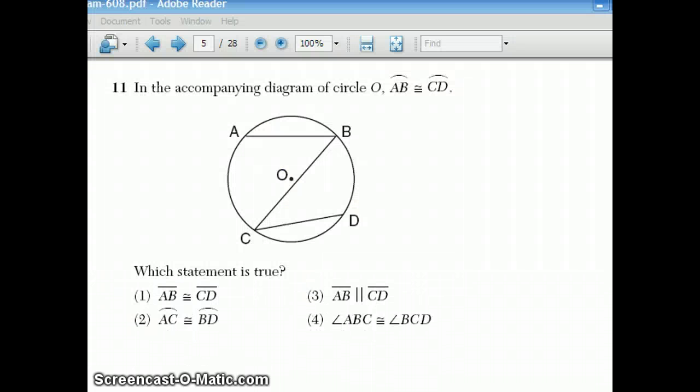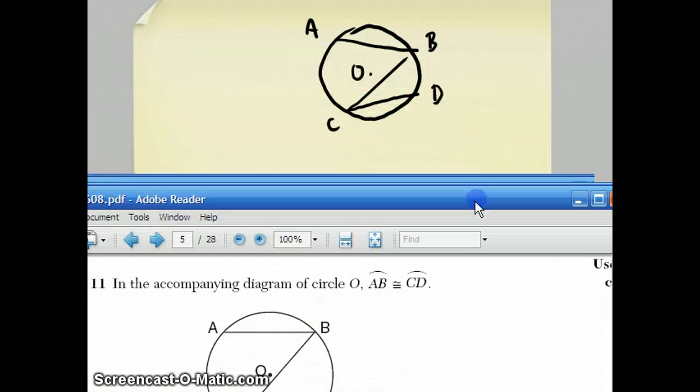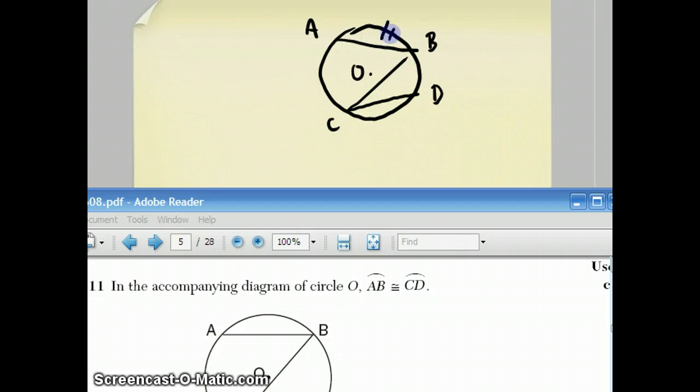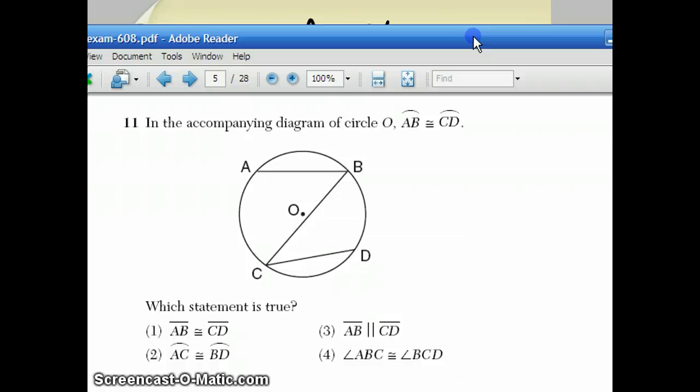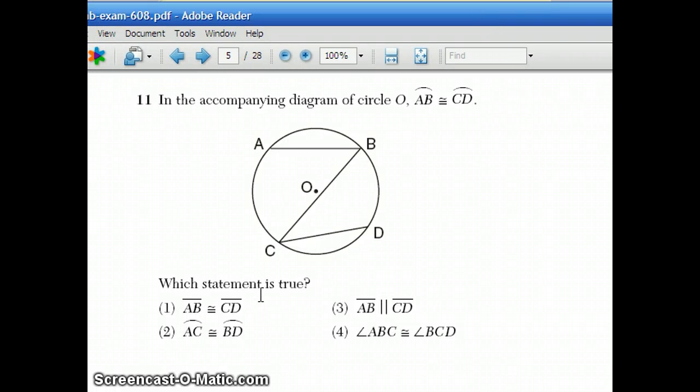Question number 11. They have a circle, center O, and they tell us that arc AB is congruent to arc CD. And they want to know which of these statements is true. Well, if arc AB is congruent to arc CD, there's a rule in geometry that when the arcs are congruent, the chords that cut them off are also congruent. So those two chords are congruent. And let's see if that's a choice AB is congruent to CD. Yeah, that's a choice. That's choice number one.